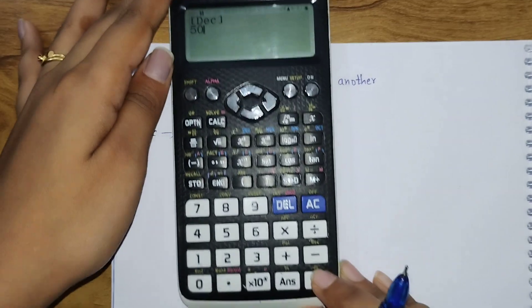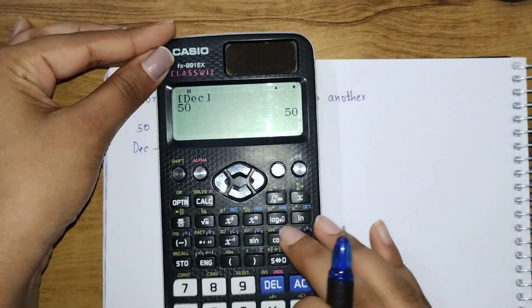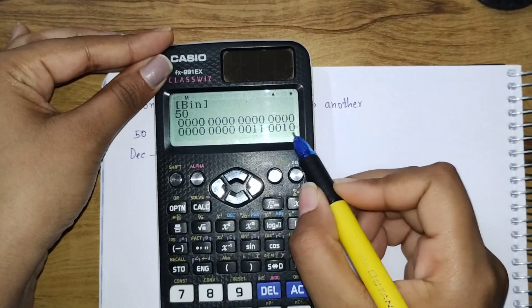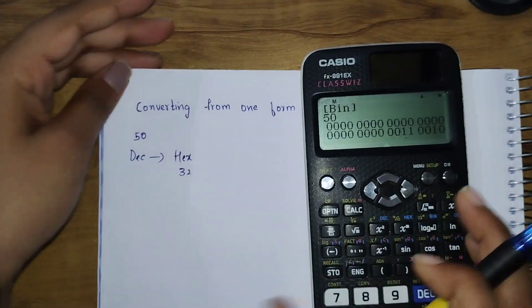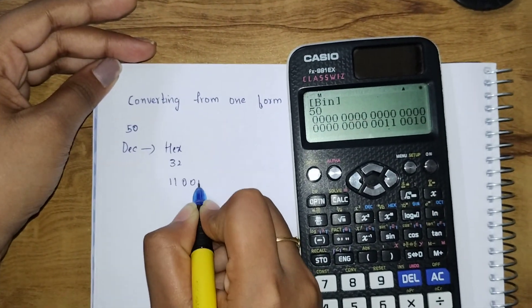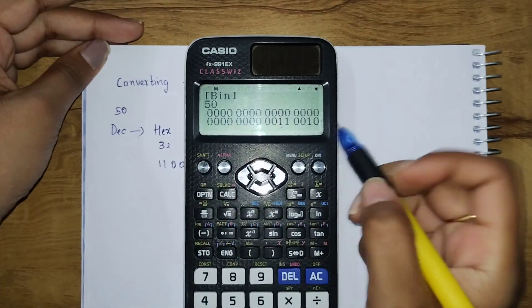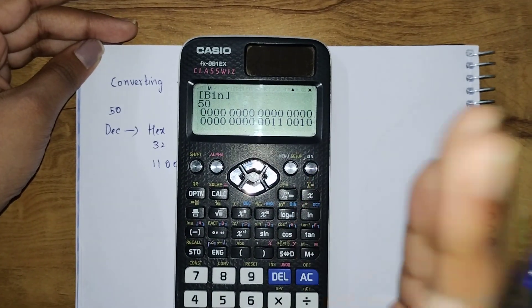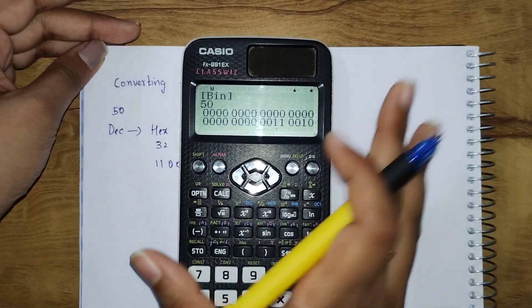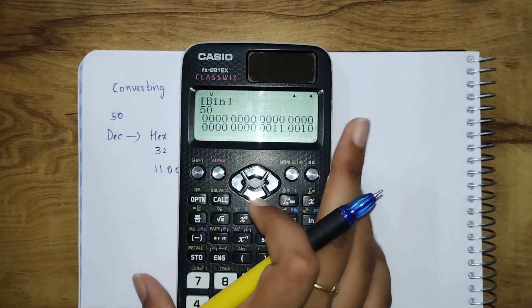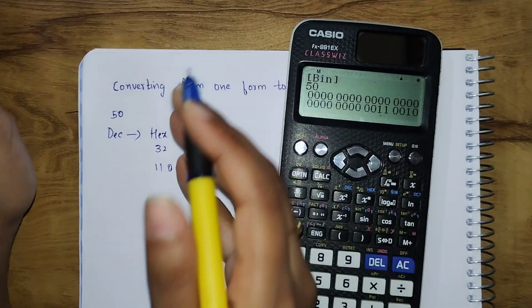We got the binary number for 50, that is 110010. We can ignore all these zeros since we will only consider the right hand side digits. That's how we write binary numbers. We start from two because the base is two.